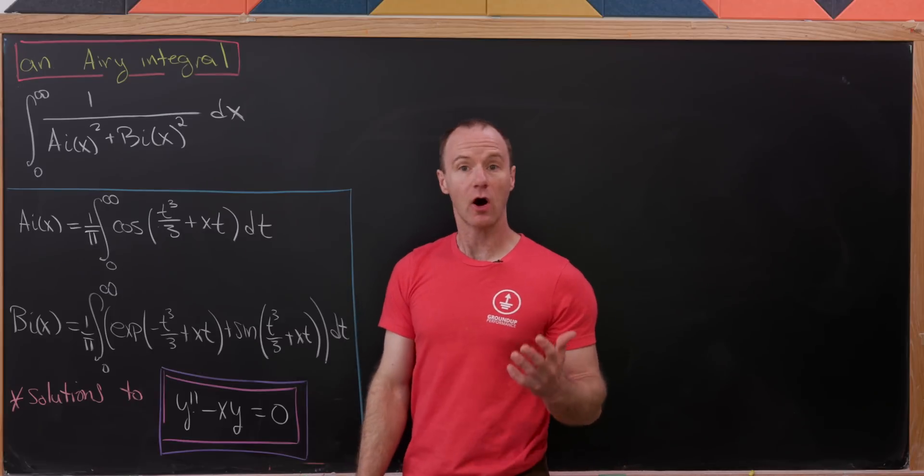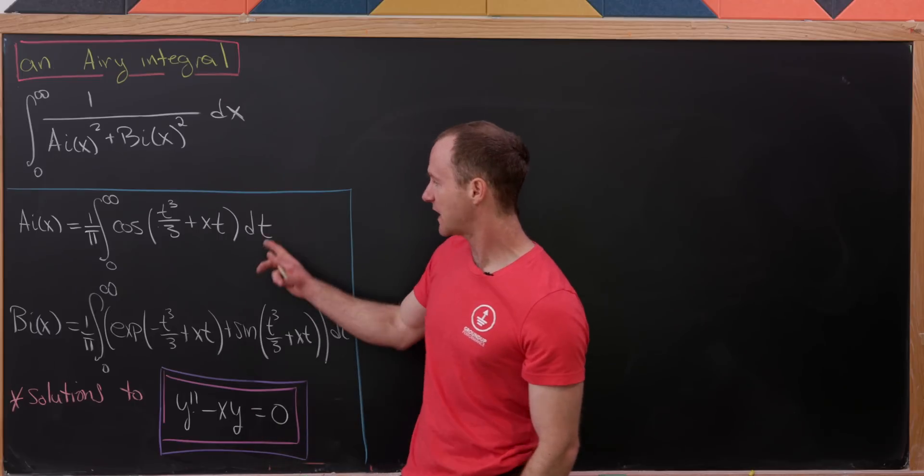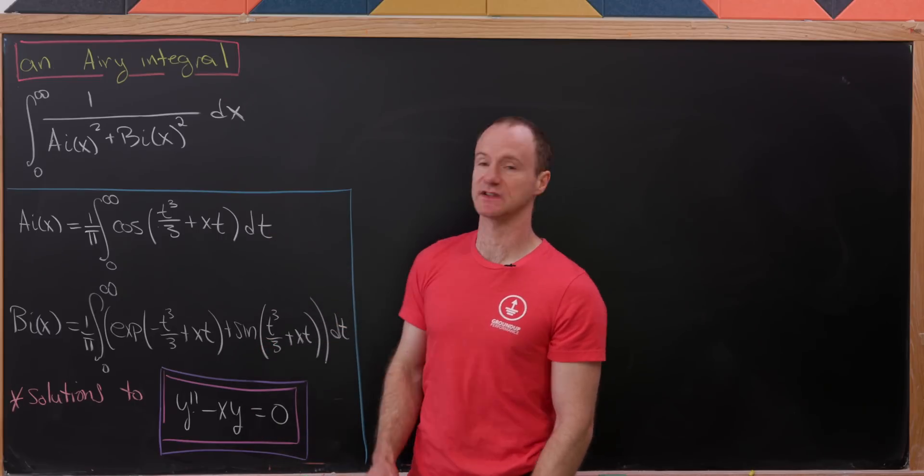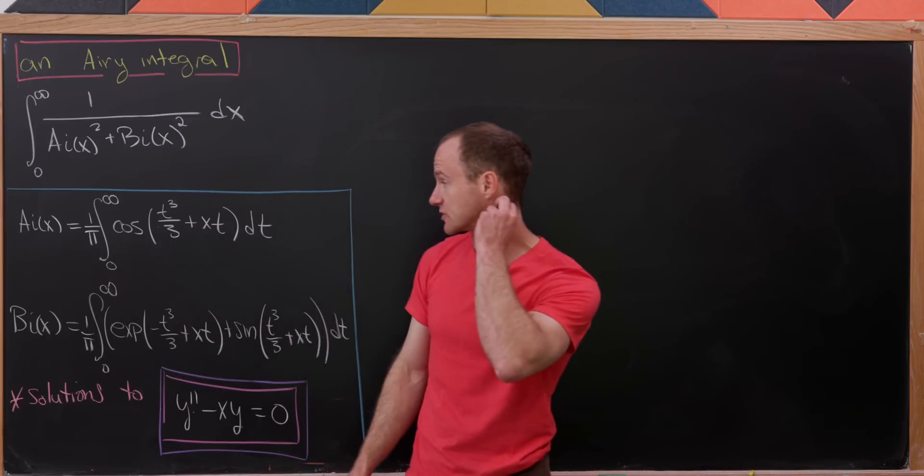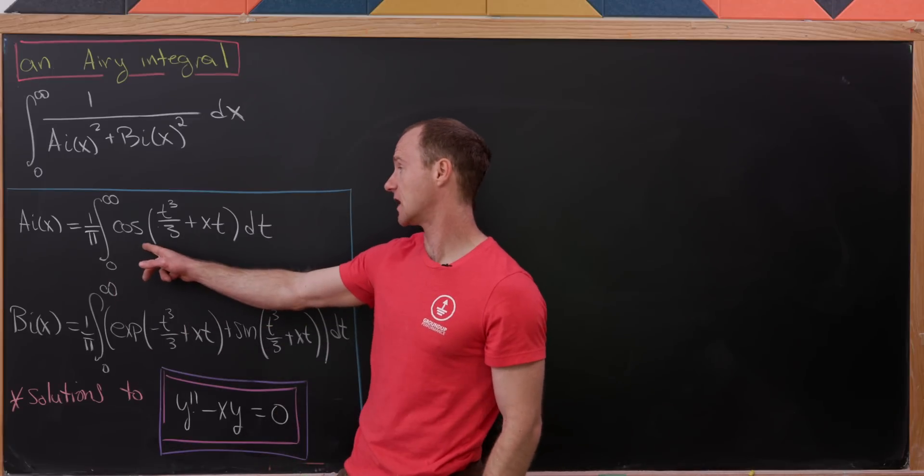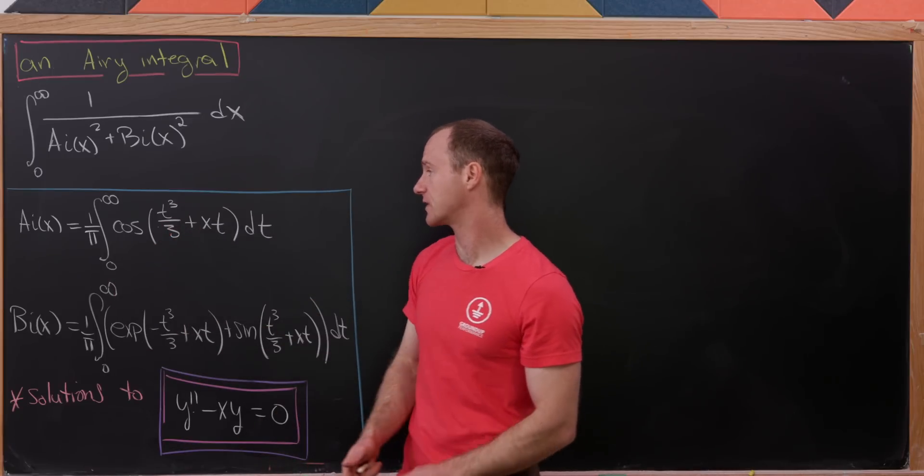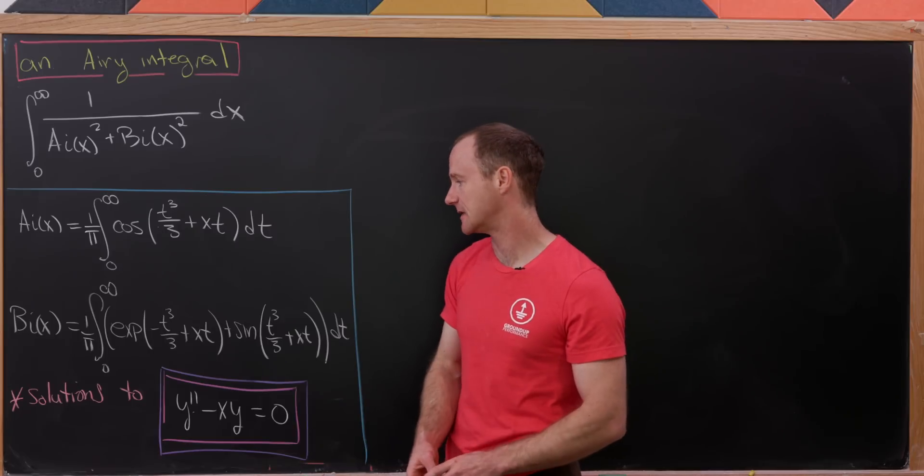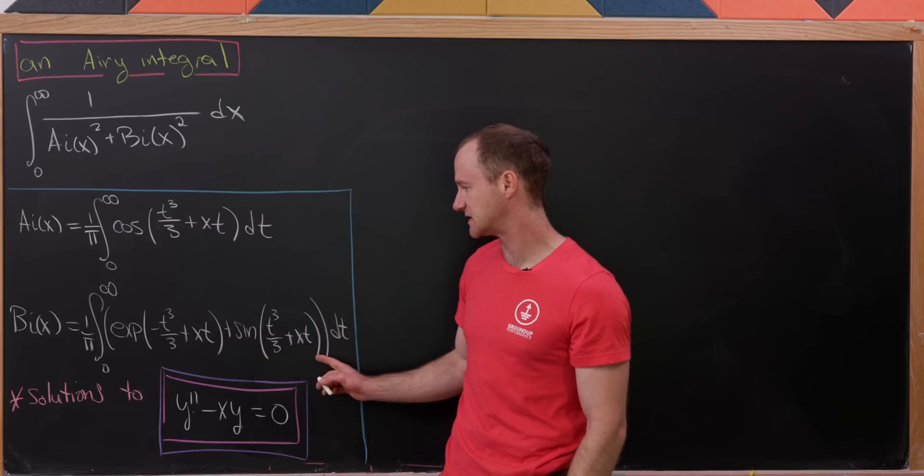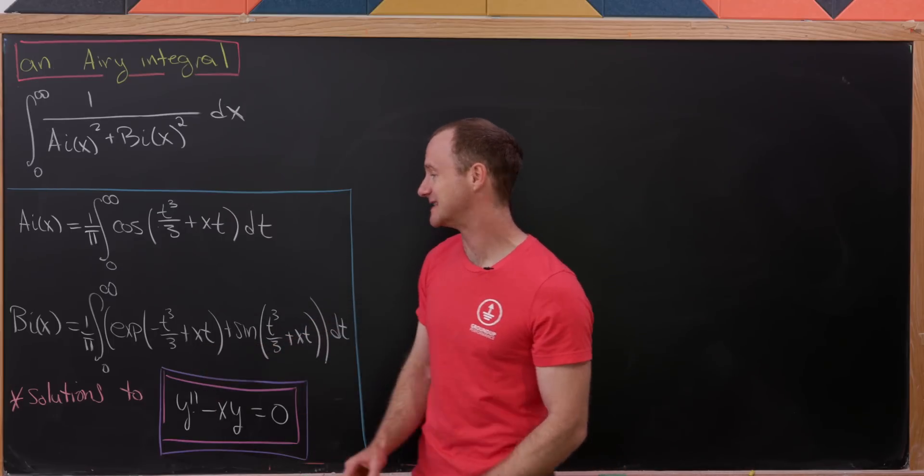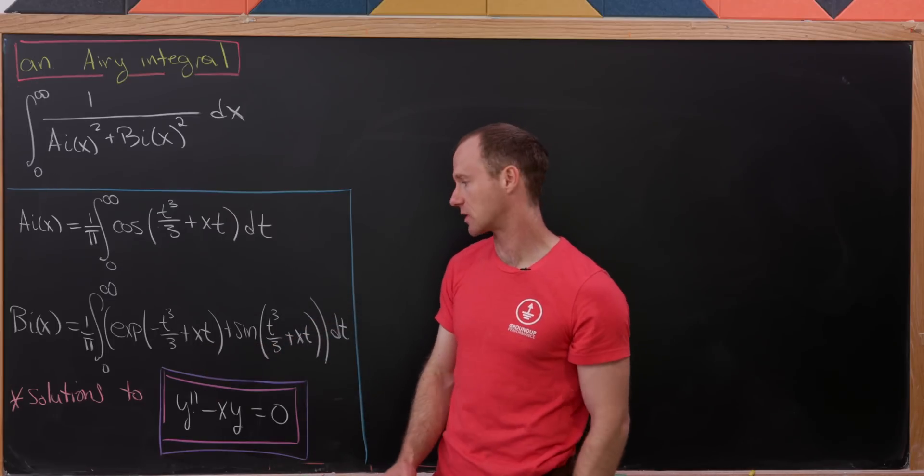And what are these functions exactly? They can be defined in terms of integrals like this. So AI(x) is 1 over pi times the integral from 0 to infinity of cosine of t cubed over 3 plus x times t. And then BI has a similar definition where we've got a sine instead of a cosine, but we have the addition of this exponential part as well.